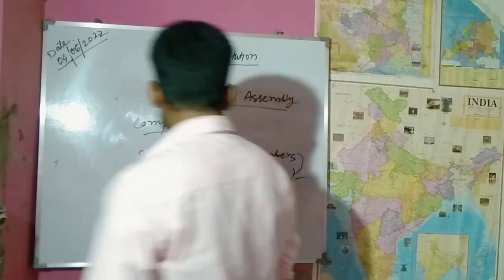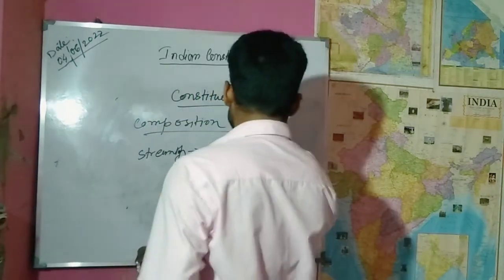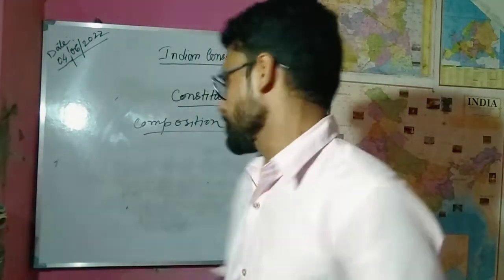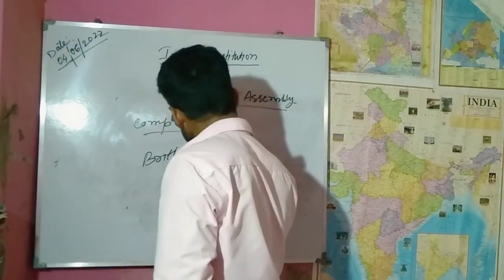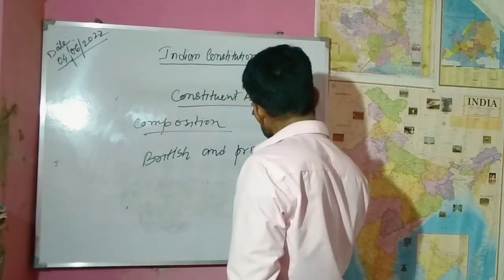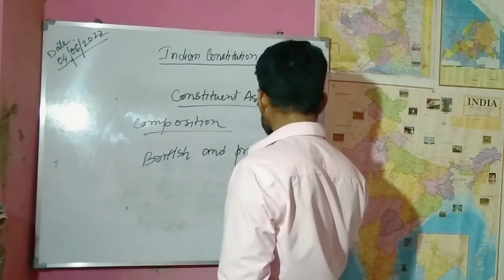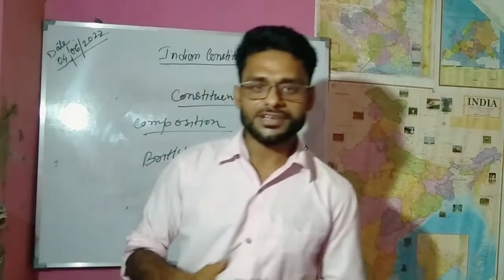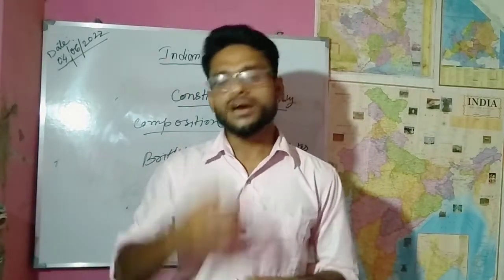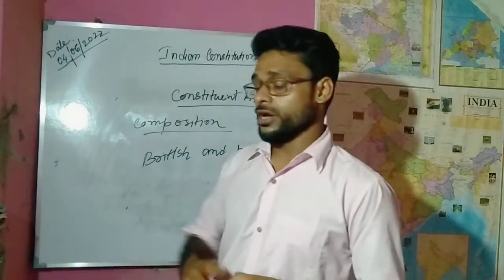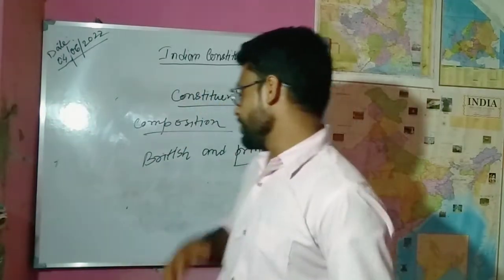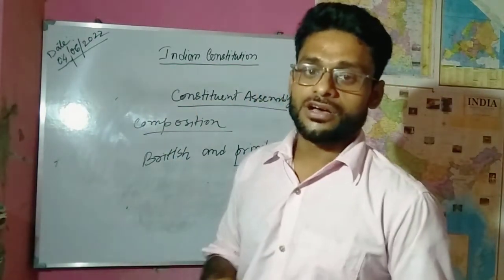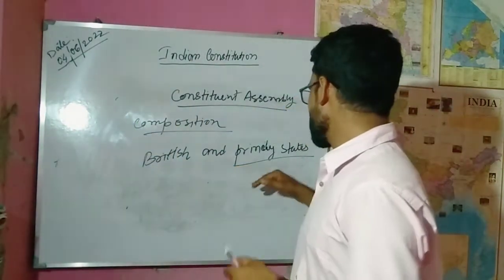This was the composition of the Constituent Assembly. All members were allocated as per British India and the Princely States. British India refers to the areas of our country that were headed and governed by the British. The remaining parts, which were headed by local princes or local kings, were called Princely States. So this is the difference between British India and Princely States.